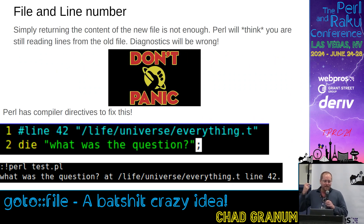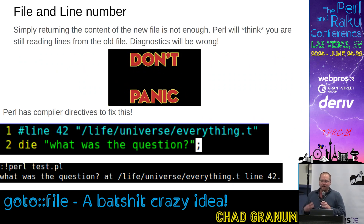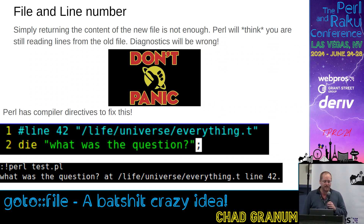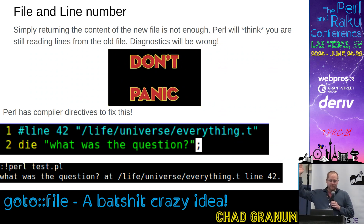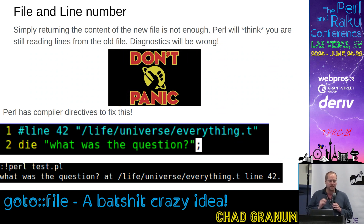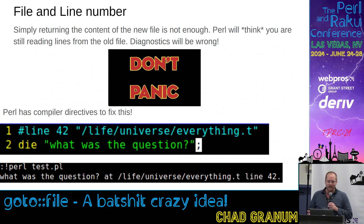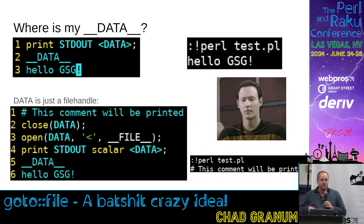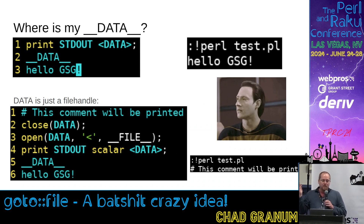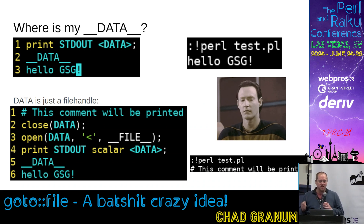File and line number: simply returning the new file still wouldn't work right, because Perl will still think you're at the previous line number of file. But Perl has a directive that you can put in — a special magic comment that changes what it thinks the current file and line number are. When you're changing file, you get a different DATA. The DATA file handle is really just a file handle, no matter what file you're on. You can close it and reopen it to whatever you want.